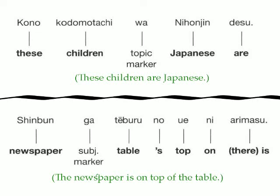Shinbun ga teburu no ue ni arimasu — newspaper, table, possessive particle, top, on, there is. In other words, the newspaper is on top of the table.